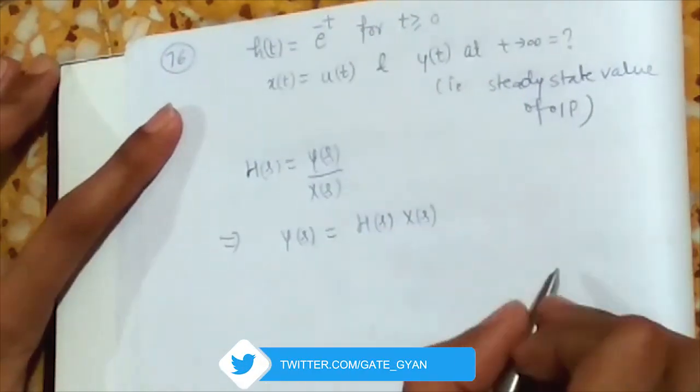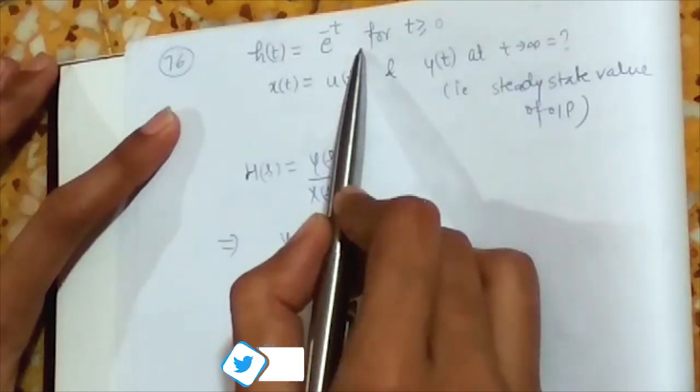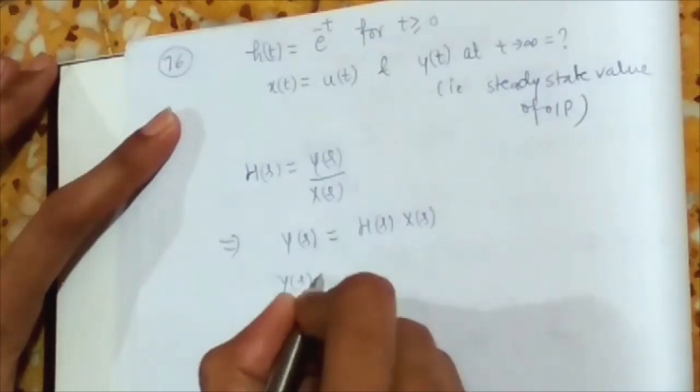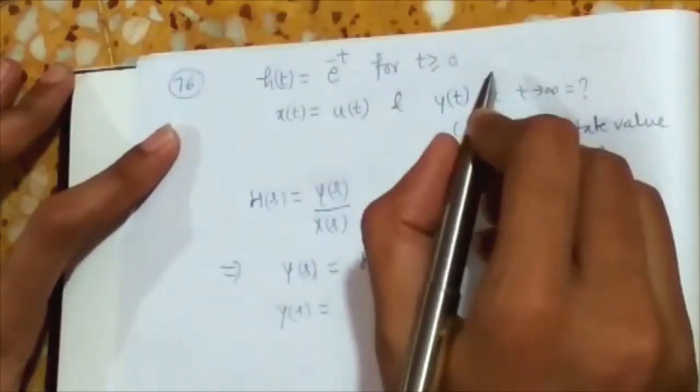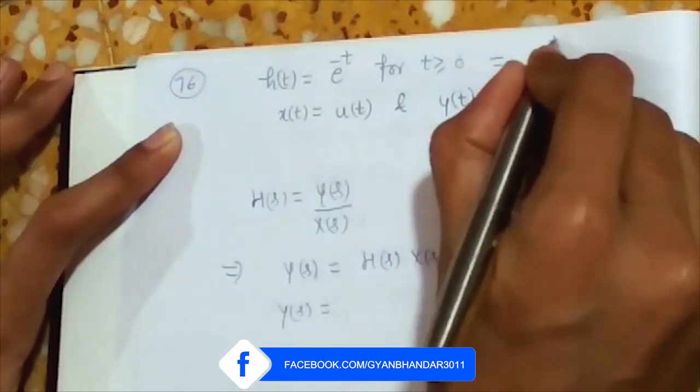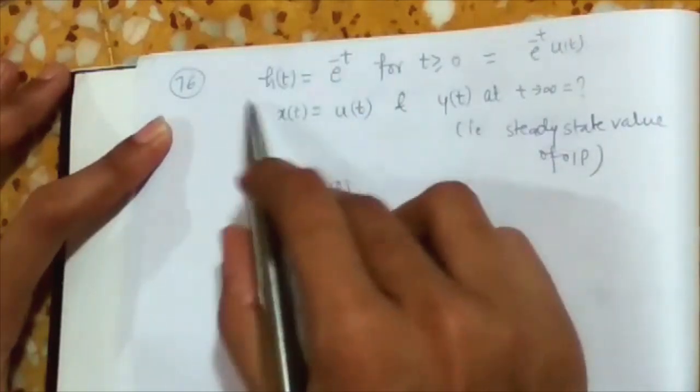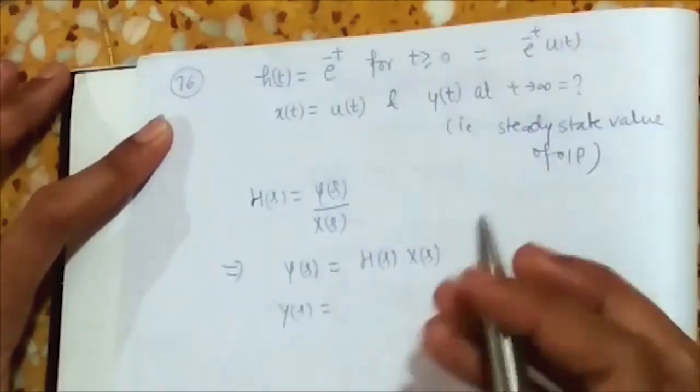Now we will convert this term into Laplace domain. So I will get my Y(s) as this will become equal to e^(-t) into u(t) as this transfer function is for t greater than or equal to 0.